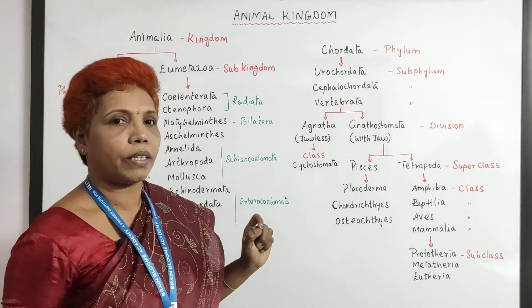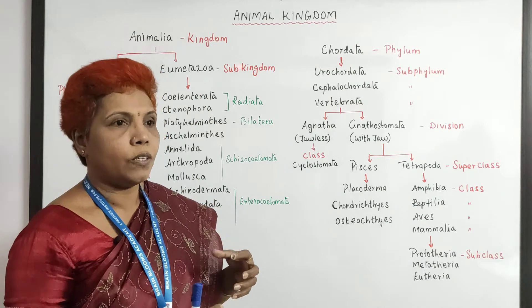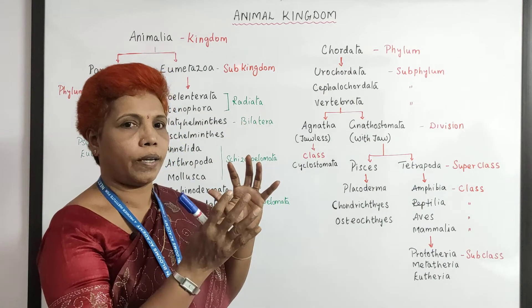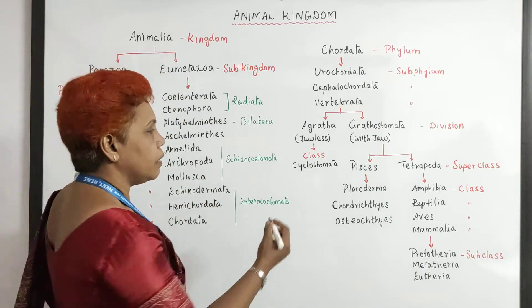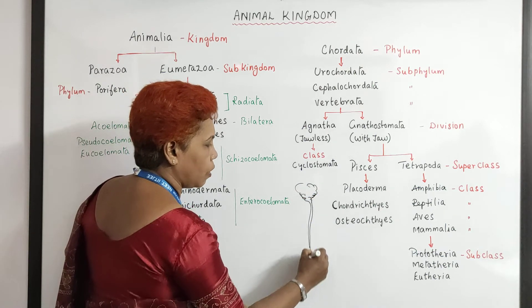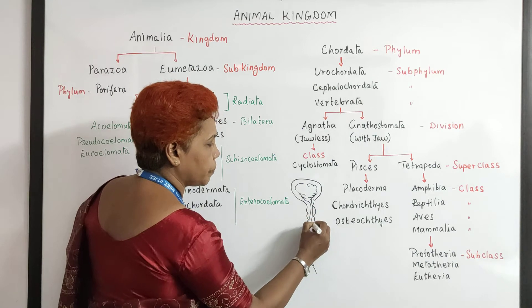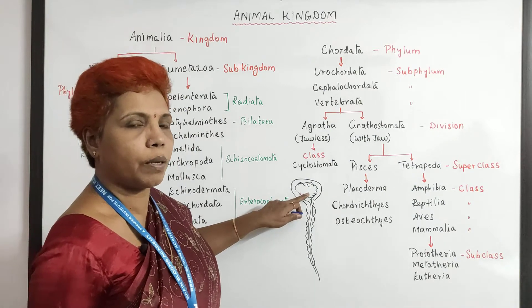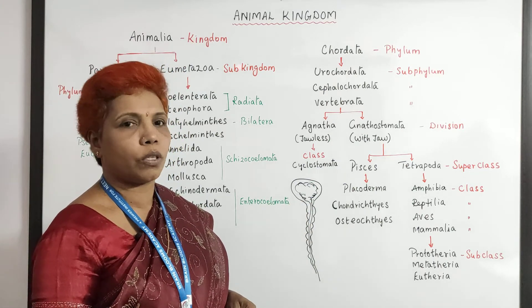When you come down to Vertebrata, the notochord is replaced by the vertebral column. Once there is a vertebral column, there is formation of a cranium, and the well-developed brain is placed inside the cranial box. The brain continues as a spinal cord, and the cranial box continues as the vertebral column. The brain is the master controller of the body, coordinating the entire organ system.